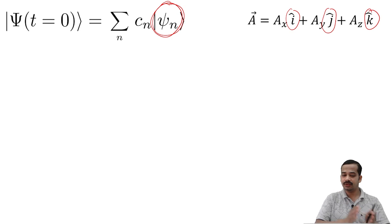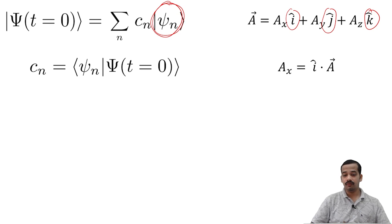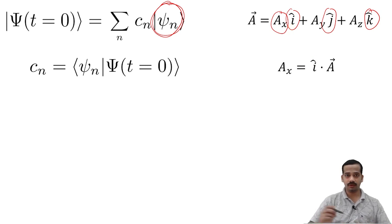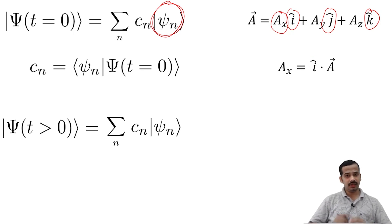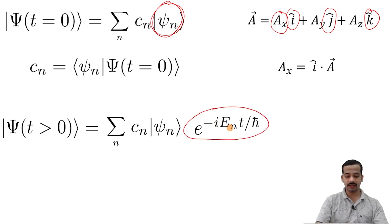Once we expand the initial state in terms of energy eigenstates, the next step is to find c-n, the coefficients. To find this coefficient you have to take the inner product between psi-n and the state at t equal to 0. This process is similar to finding the A-x component of a vector by taking the dot product with the respective basis or unit vector. The state at time t greater than 0 can then be obtained by multiplying each psi-n in the summation with the respective exponential time-dependent factor e to the power minus i E-n t by h-bar.